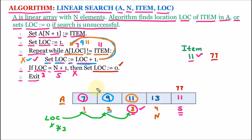Here we are comparing the item with all the elements one by one, linearly. That's why it is called linear search — searching one by one. So that is the algorithm for linear search.